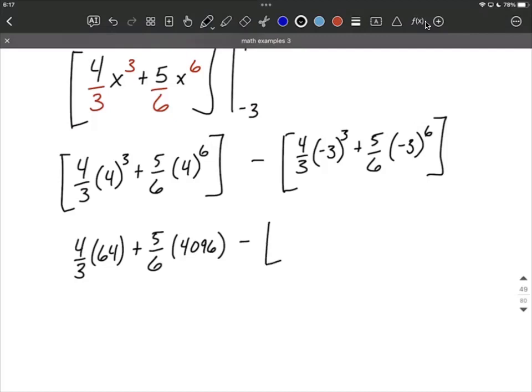Minus, and I am keeping the set of brackets on this one, because we have that subtraction out in front. So it's going to be 4 thirds, and then negative 3 cubed is going to be 3 copies of a negative, makes negative 27, plus 5 sixths, and again, pulled out of the calculator, negative 3 to the 6th power is going to be positive because it's an even number of negatives, 729.